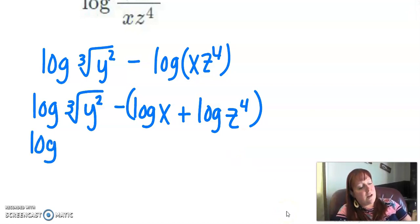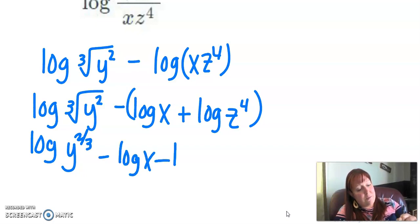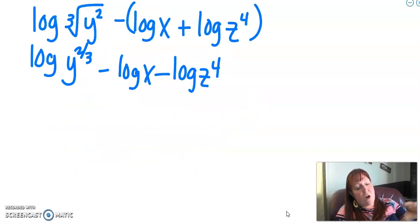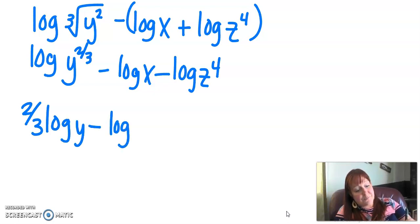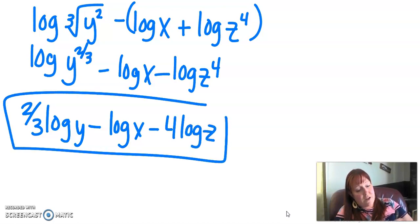So this is log, and I'm going to write that as an exponent instead of as a root. So that's going to be y to the two-thirds minus log of x minus log of z to the fourth. And then last but not least, we're going to take all of those exponents down. We're going to have two-thirds log of y minus log of x minus 4 log of z, and we are finished.